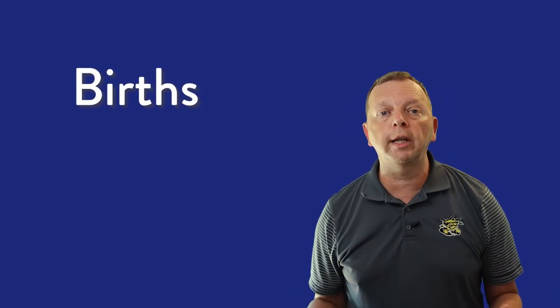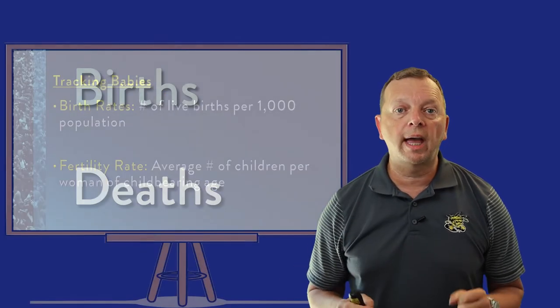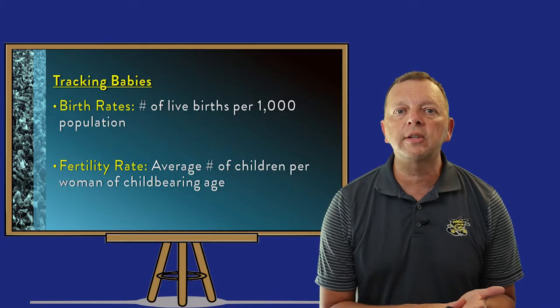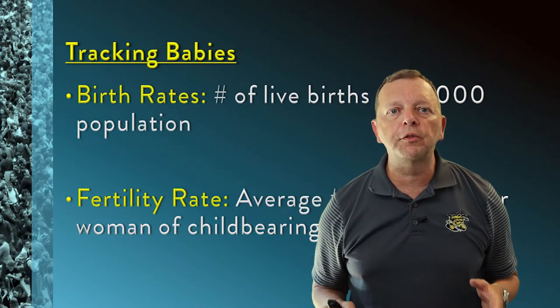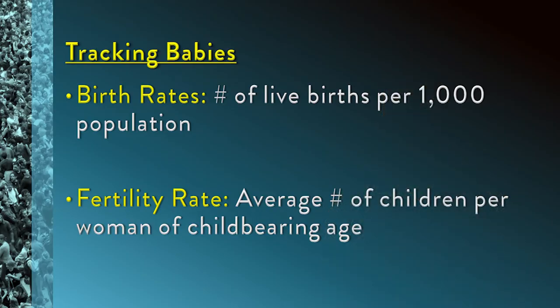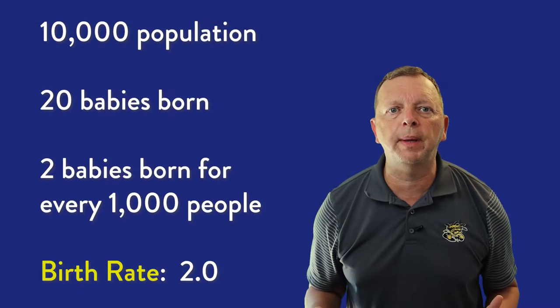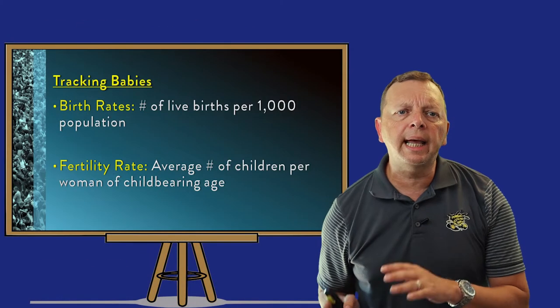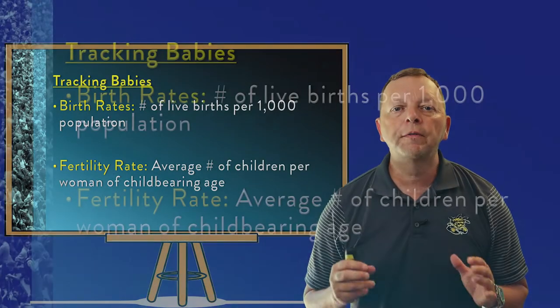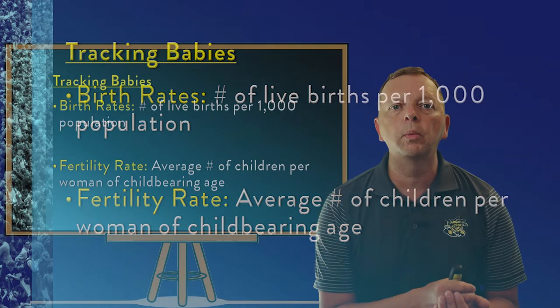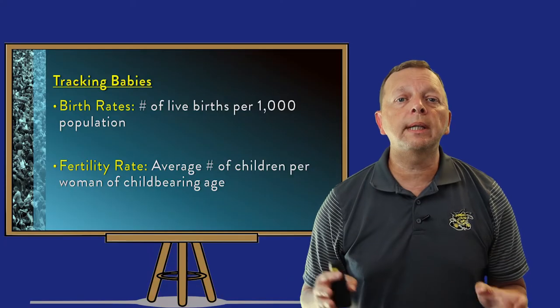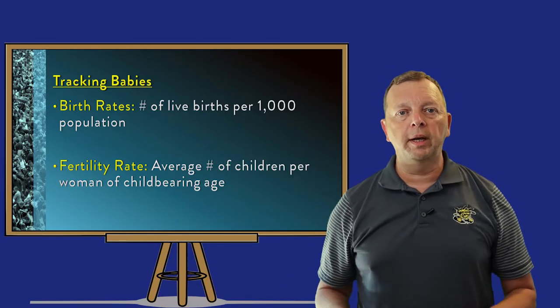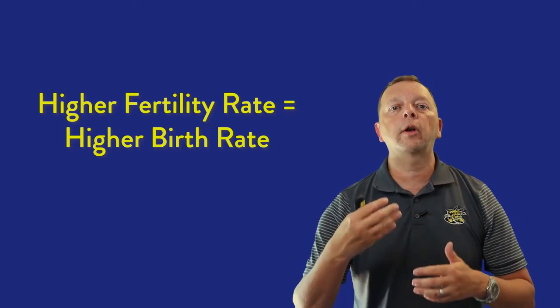When we use demography to describe a population, it studies two things that everyone has to do: we all have to be born, and unfortunately we all have to die. There are two numbers we look at when tracking babies: birth rates and fertility rate. A birth rate is the number of live births for every 1,000 population. For example, if your country had only 10,000 people and 20 babies were born in a year, your birth rate would be 2.0. A related number is the fertility rate — the average number of children that women in a country will have in their lifetime. If you have a higher fertility rate, you're going to have a higher birth rate.